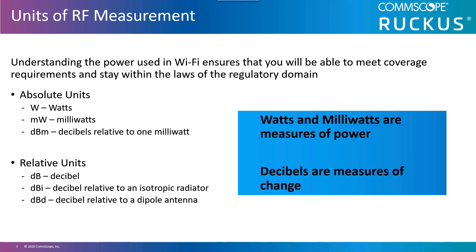Another measure you may see used in antenna descriptions is dBd — a decibel measured relative to a half-wave dipole antenna. A dipole antenna is the proper name for what most people call an omnidirectional antenna. More often than not, you will see dBi used for antenna power.